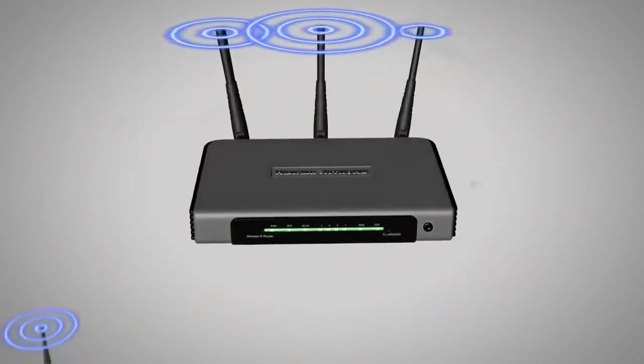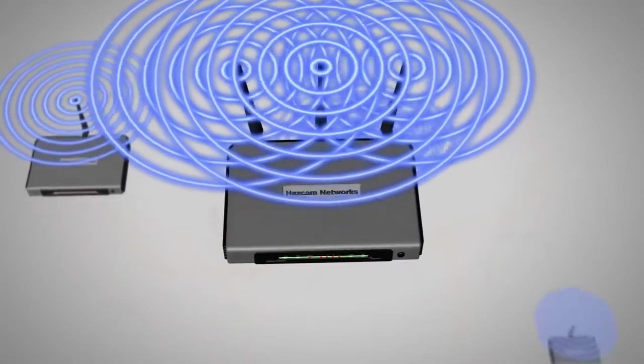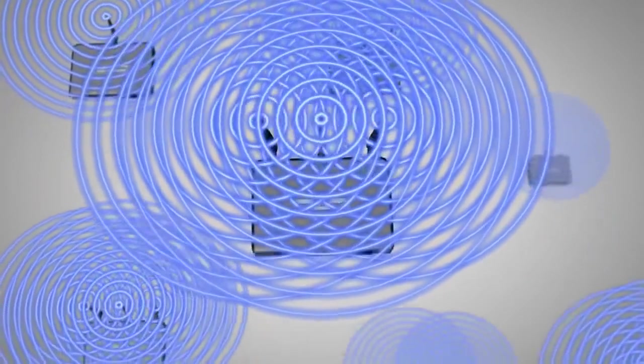Traditional Wi-Fi access points flood transmissions in all directions. A signal that goes anywhere except to the intended receiver is just interference.